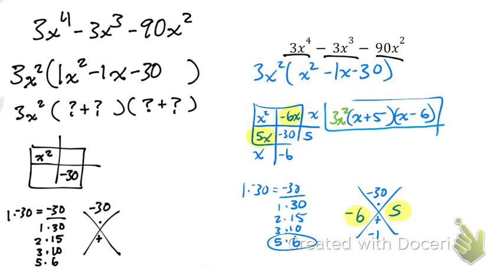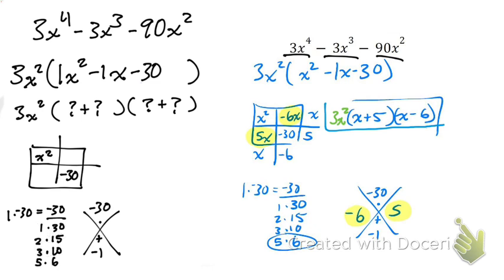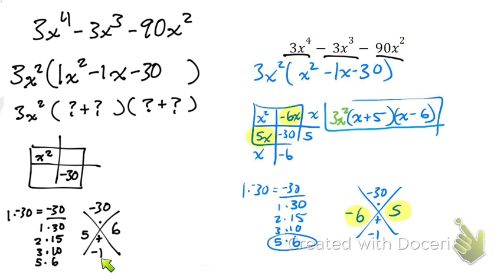Now I need to find which of those numbers adds to give negative one. I'll set up the diamond puzzle with negative 30 on top and negative one on the bottom. Which pair multiplies to negative 30 and adds to negative one? The answer is 5 and 6, but one has to be negative. To get negative one when added, it has to be negative six. Check: 5 times negative 6 gives negative 30, and 5 plus negative 6 gives negative one. Those are the numbers that go in the boxes.